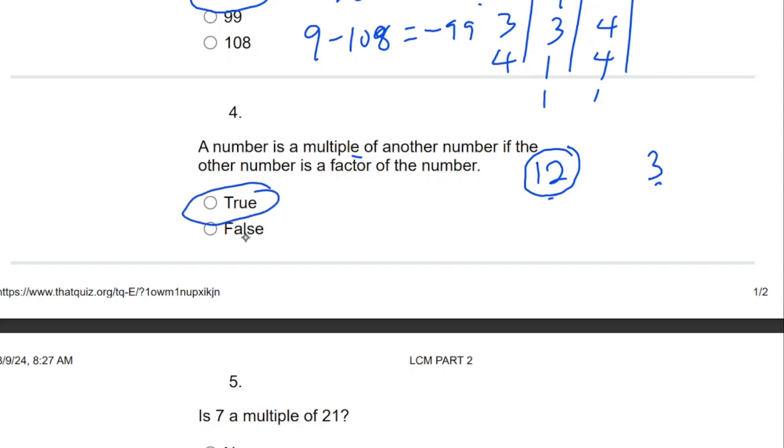Is 3 a factor of this number? Yes. So the answer is correct. Because we have 3 times 4, the multiple is 12. So this 12 is a multiple of 3, and this 3 is a factor of 12. The 12 is a multiple of 3 and 4, and 3 and 4 are factors of 12. That's why they say a number is a multiple of another number if the other number is a factor of the number.